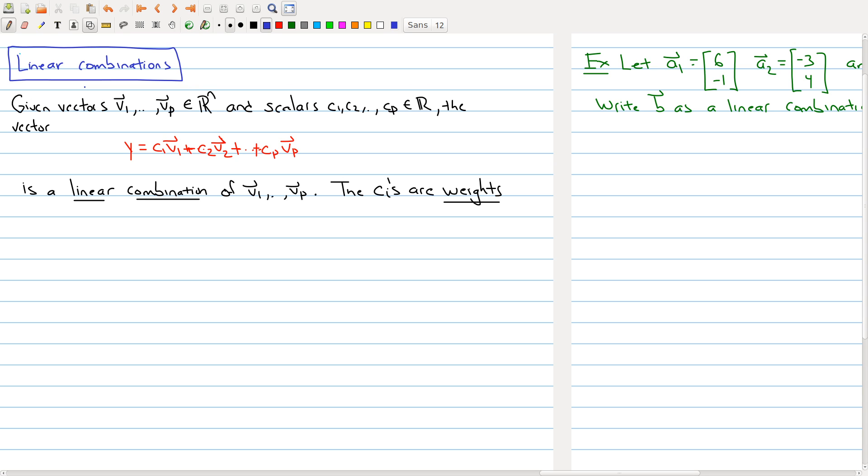The next topic that we would like to look at is the topic of linear combinations. Now given vectors inside of n-dimensional or n-space, this little symbol here means that these vectors v₁ through vₚ belong to ℝⁿ, and some scalars c₁ through cₚ, because they're scalars they belong to the real numbers.